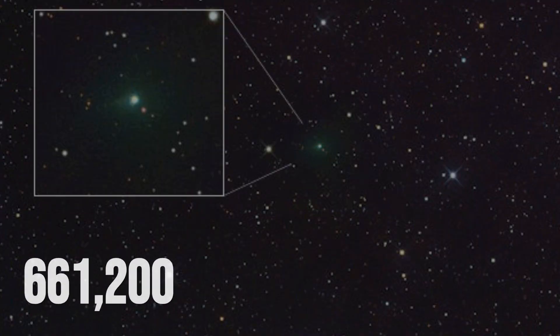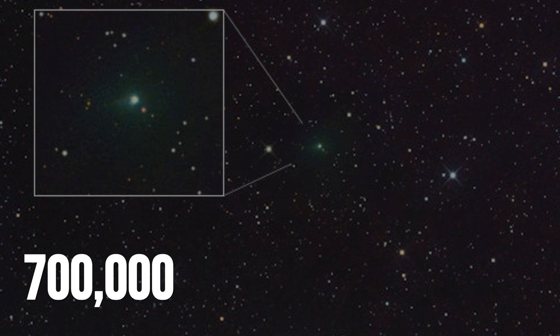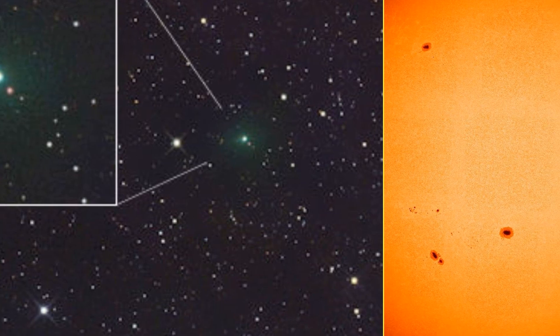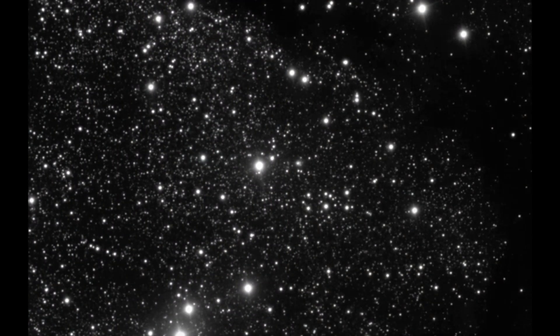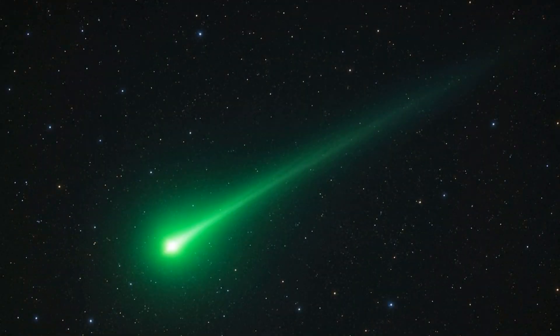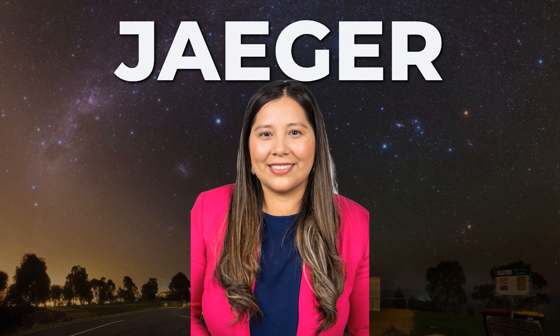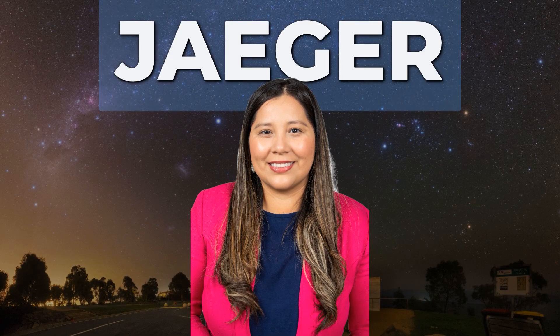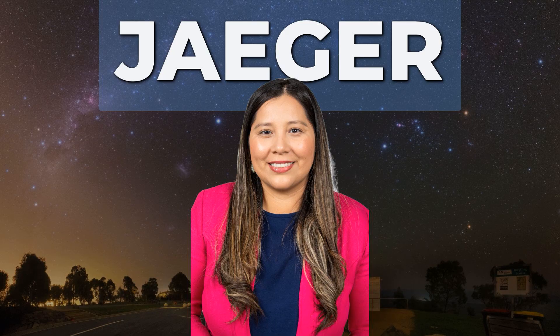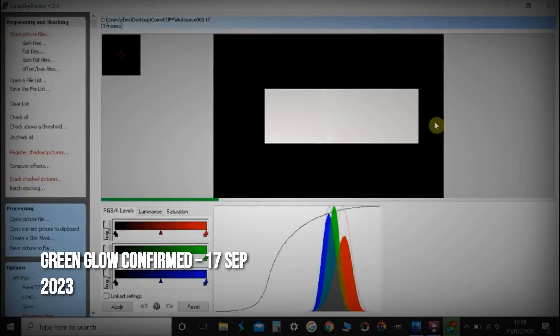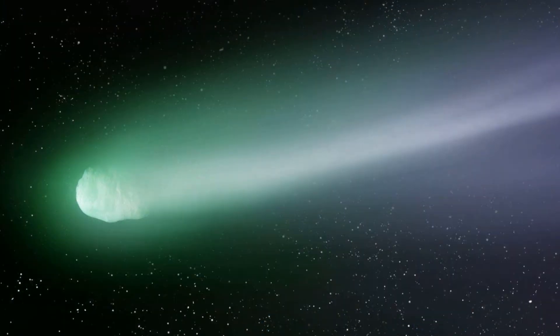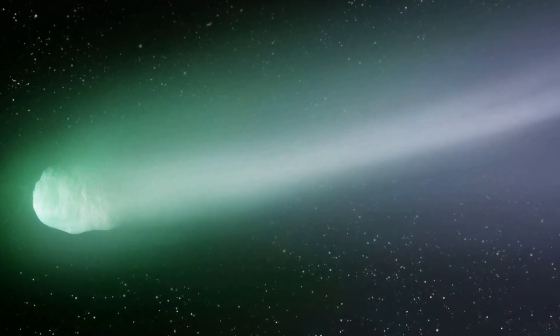The coma of 3I/Atlas now stretches nearly 700,000 kilometers across, about half the width of the sun. But it's not just size that's drawing astronomers in. Since mid-September, a vivid emerald glow has started to dominate the images, visible in both professional and amateur photographs. Michael Yeager, after driving hundreds of kilometers for clear skies, captured the first stacked exposures that confirmed the green color on September 17th. That glow isn't cosmetic, it's a chemical fingerprint.